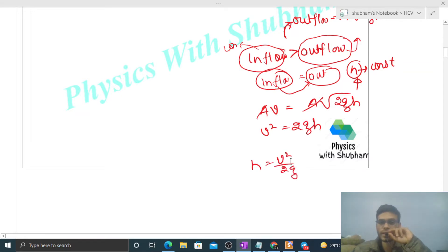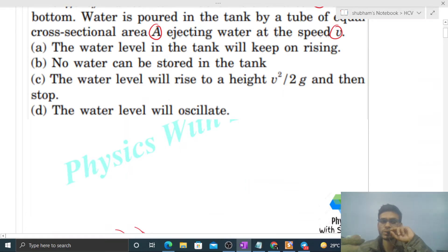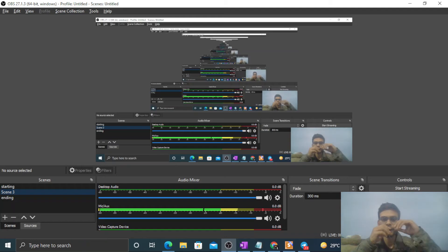So initially the water level in the tank will increase, and up to what point will it increase? v squared divided by 2g. So option c is correct. So I think you have understood. Let me know if you still have any confusion, we can discuss further. Okay, keep working hard, best of luck.